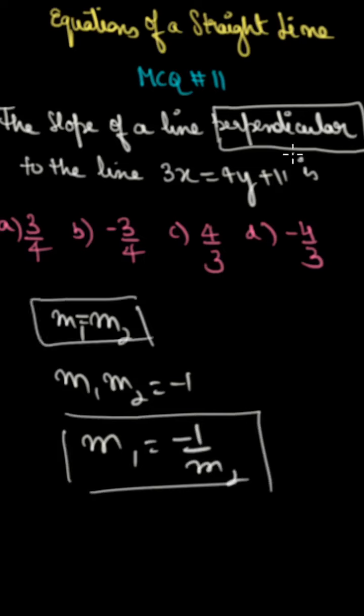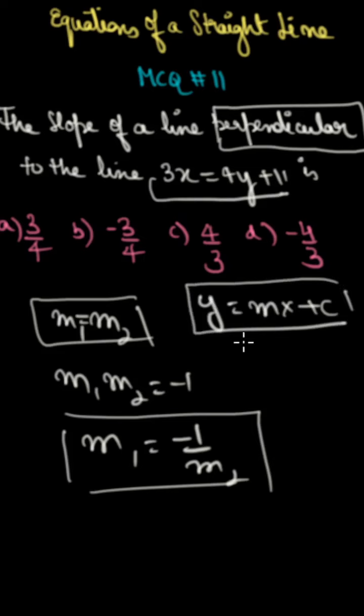This case is going on, so to find the perpendicular slope, how do you get it? First of all, what is the general form of the line? y is equal to mx plus c. This equation is the general form of the line.